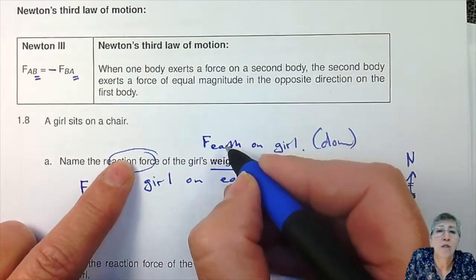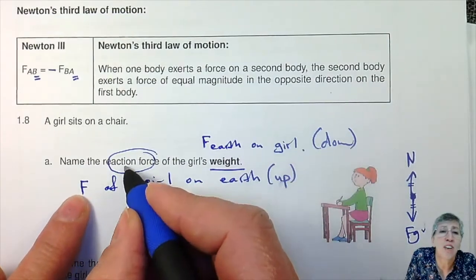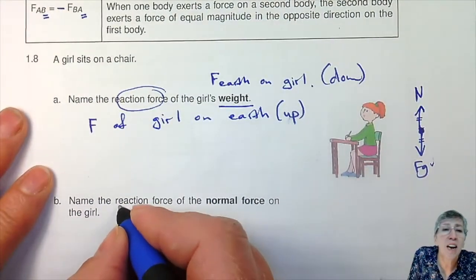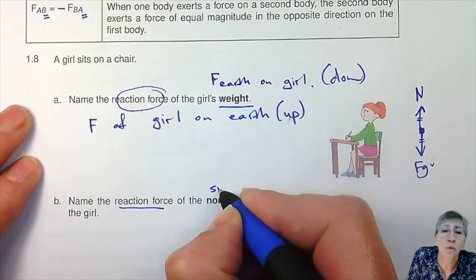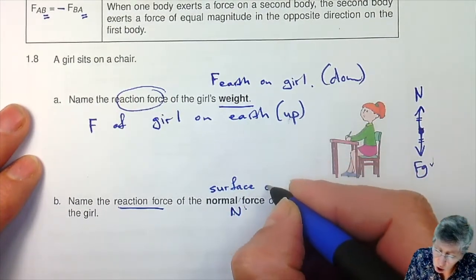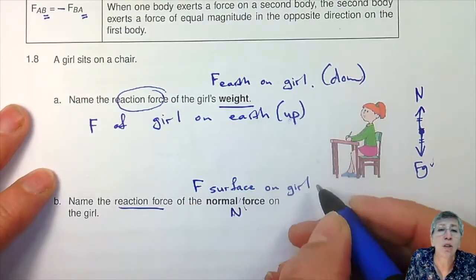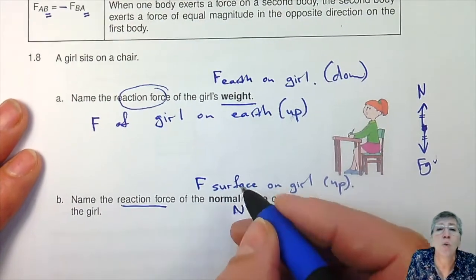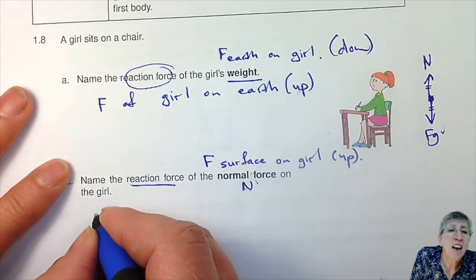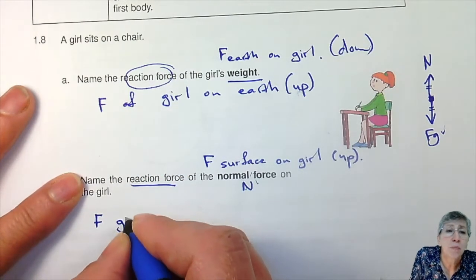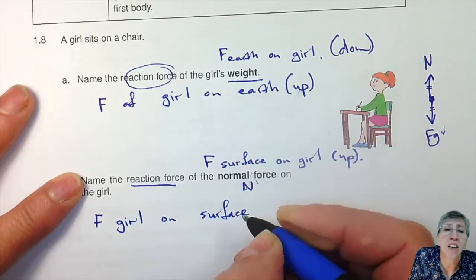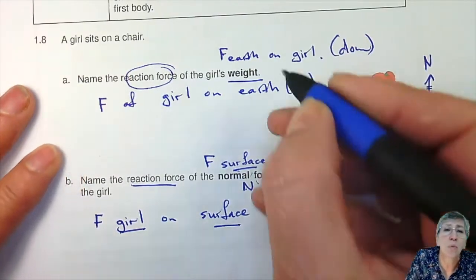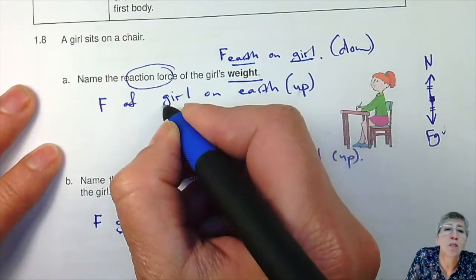So if the force is the earth attracting the girl downwards, then the reaction force should be the force with which the girl is attracting the earth upwards. Now, name the reaction force of the normal force. The normal force is the chair on the girl — the force of the surface on the girl, working upwards. So the reaction force is the girl on the surface, which is a downward force. Earth on girl → girl on earth. Surface on girl → girl on surface.